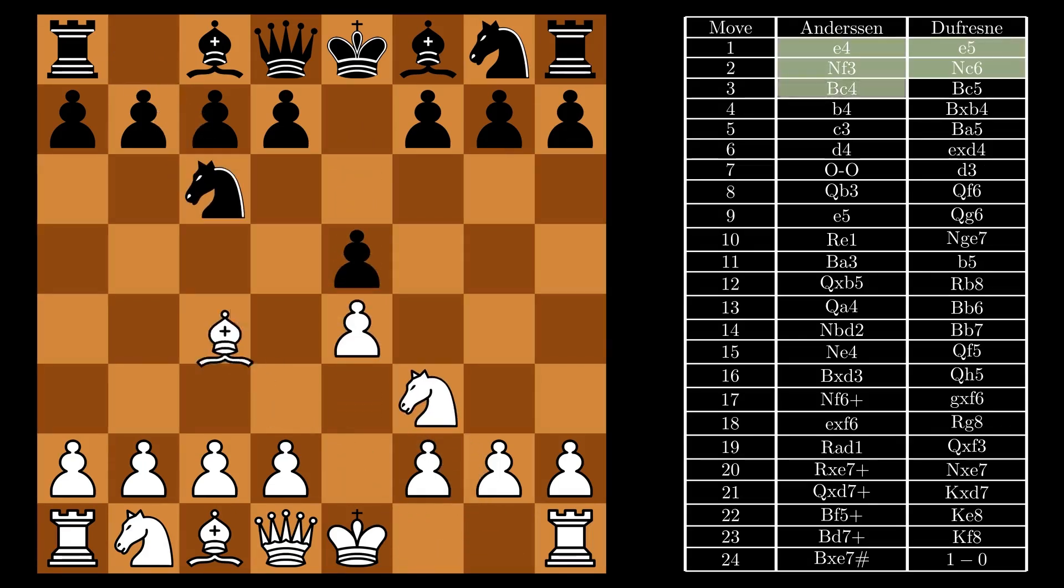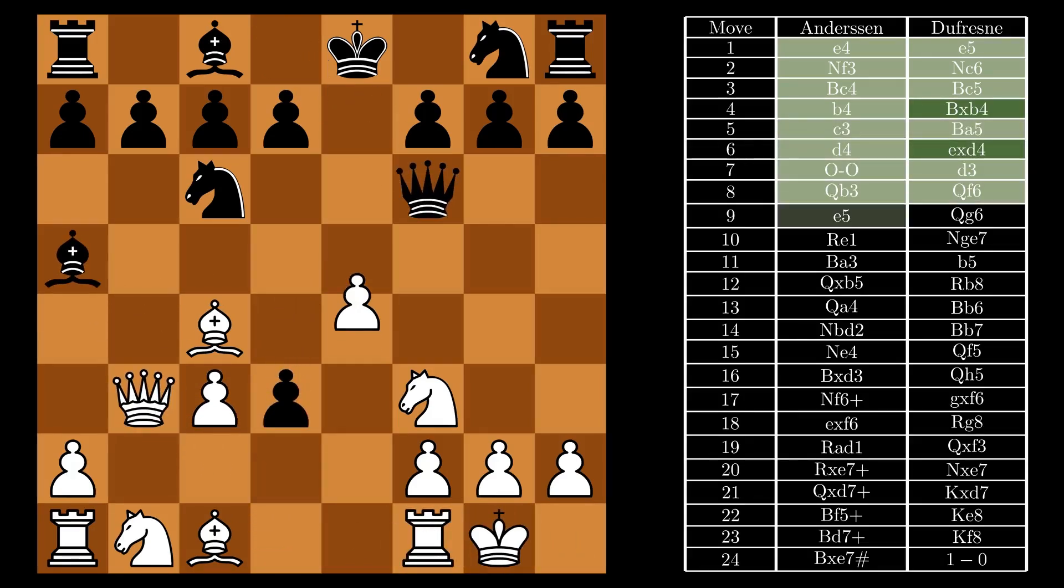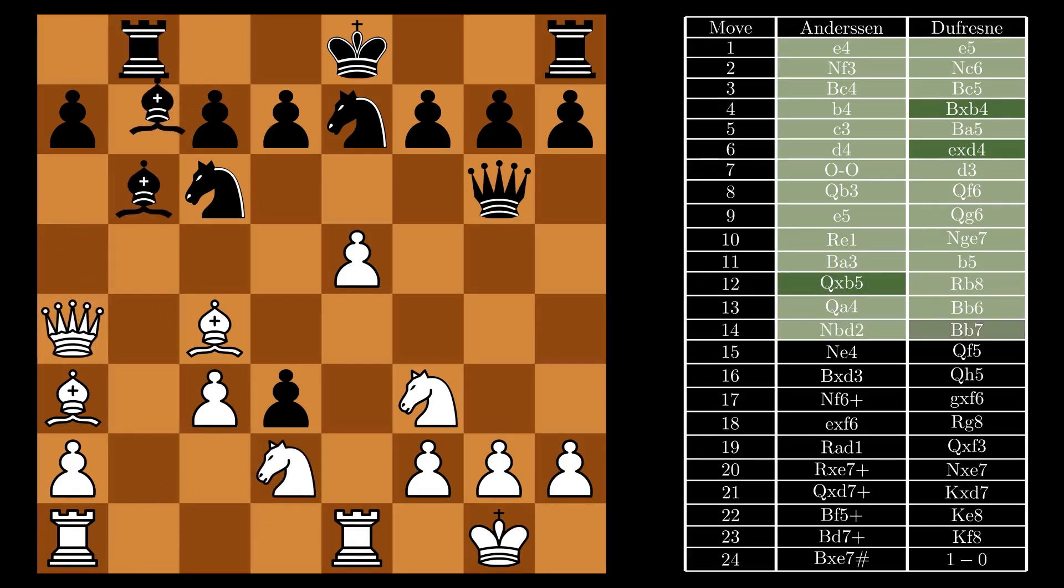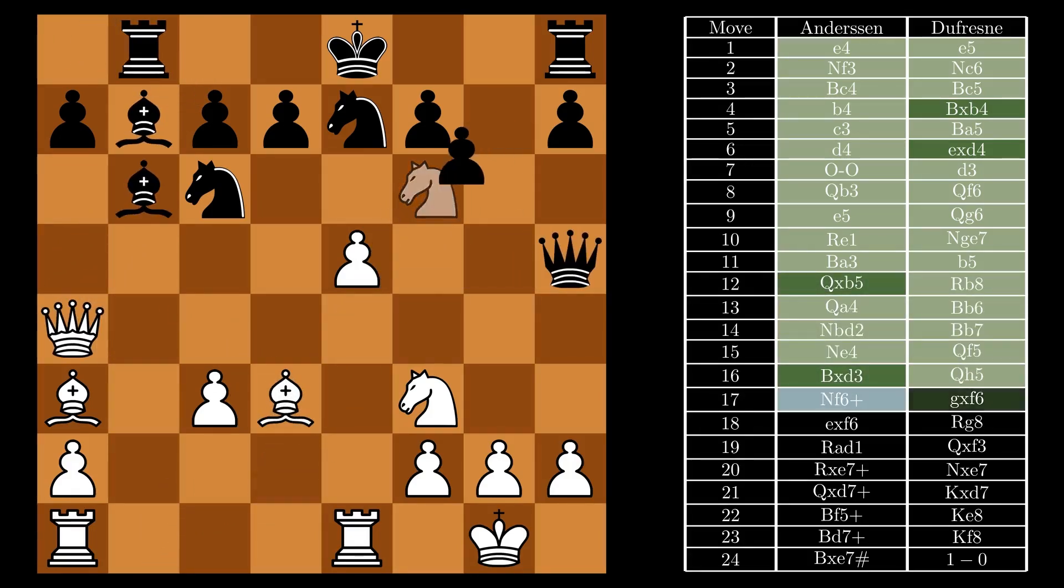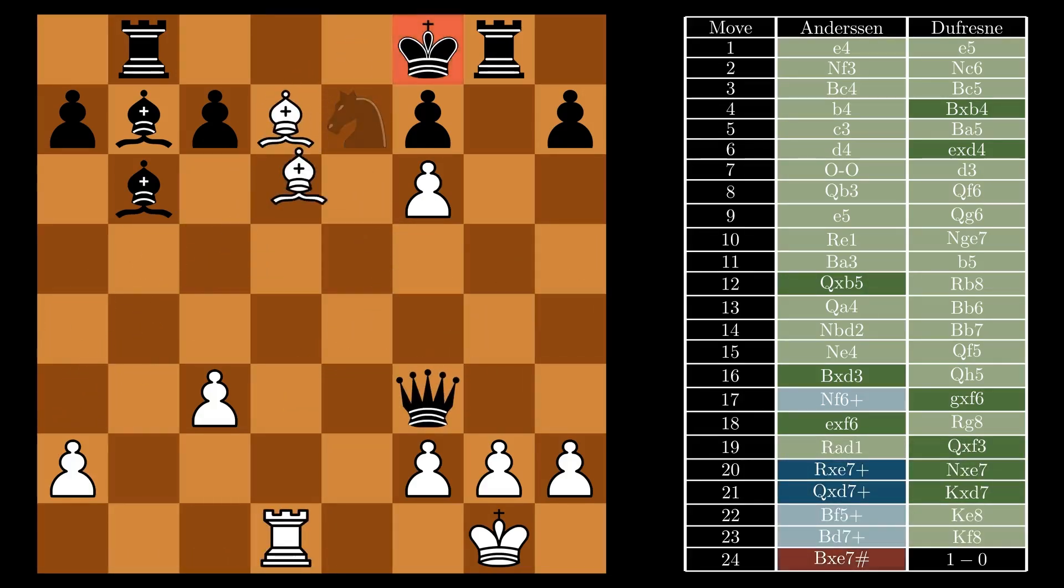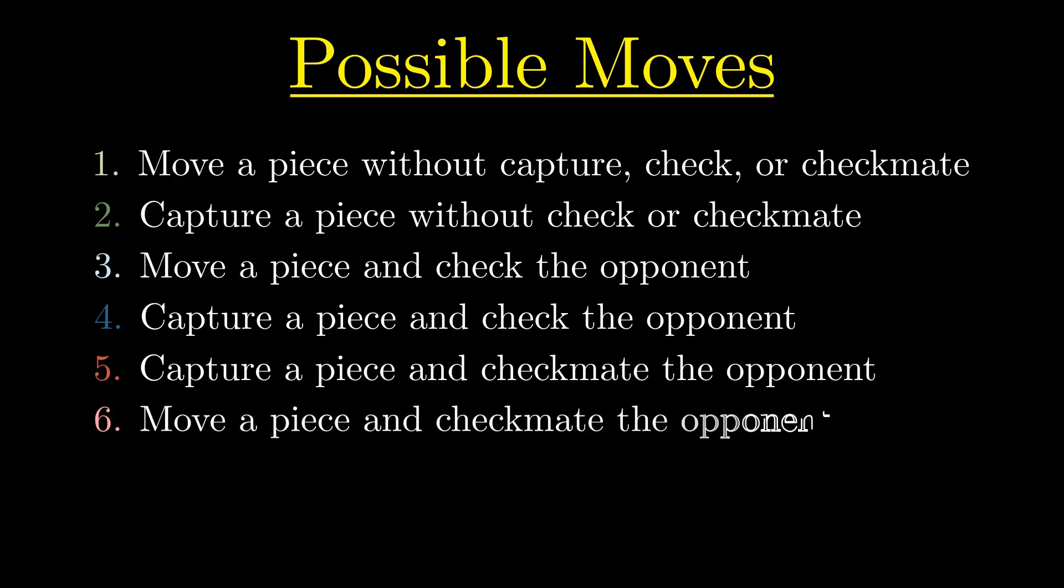In this game, the actions performed by Adolf Andersen and his opponent include moving a piece without capturing, checking, or checkmating the opponent, capturing a piece without checking or checkmating the opponent, moving a piece and checking the opponent, capturing a piece and checking the opponent, and finally, capturing a piece and checkmating the opponent. There is a 6th move type that did not occur in the Evergreen game since checkmate can only occur once, and that's moving a piece and checkmating the opponent.